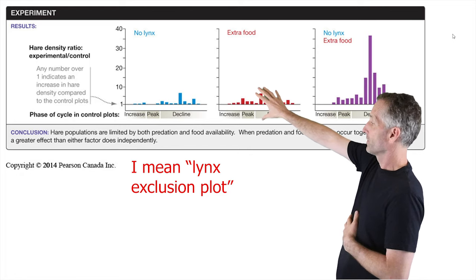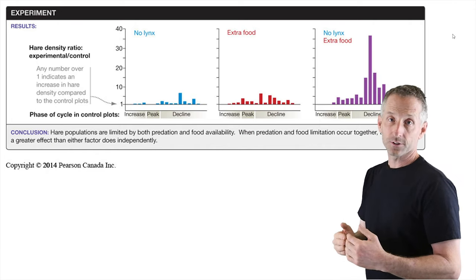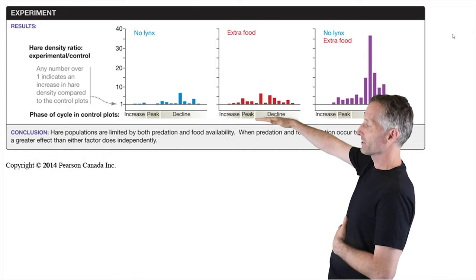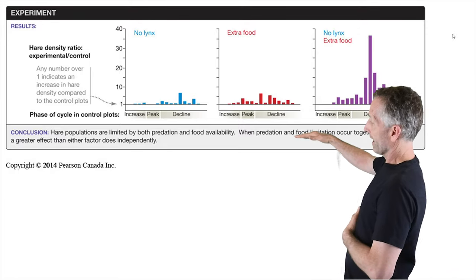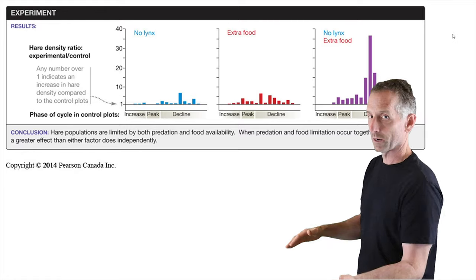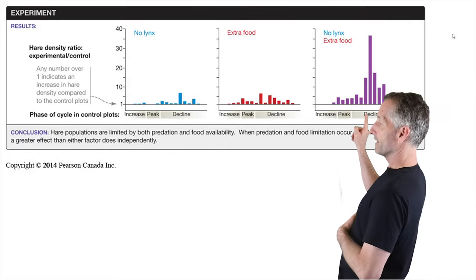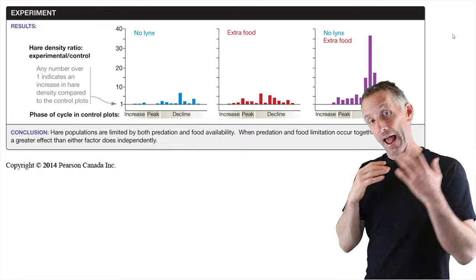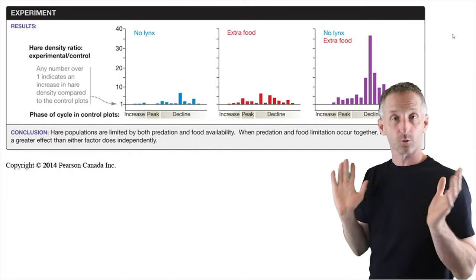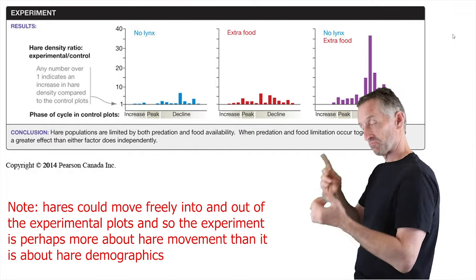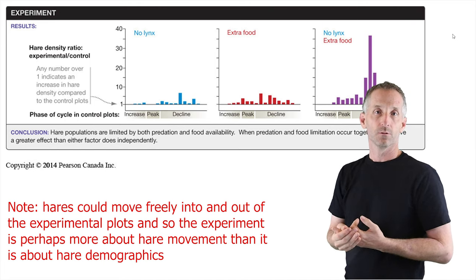Here are the results over many years for the different treatments relative to the control. In the lynx exclusion plot, you can see a modest increase in hares compared to controls. If you give them extra food but don't exclude lynx, you see an increase in the hare population, but it's not super dramatic. But in the plot where you excluded lynx and added extra food, you see a dramatic increase in hare abundance. This suggests it's not predators alone driving the cycles, nor food limitation alone — rather it's the combination of the two driving the cycles.